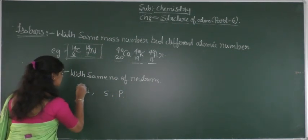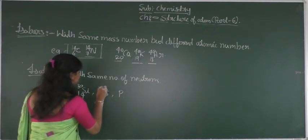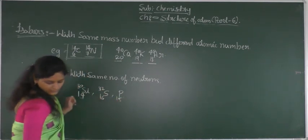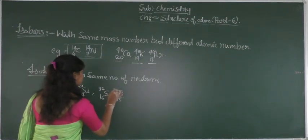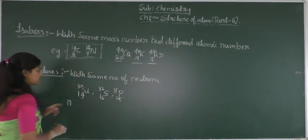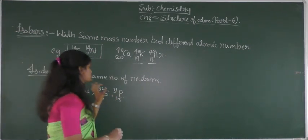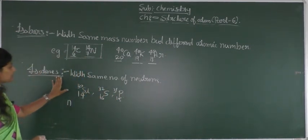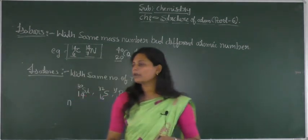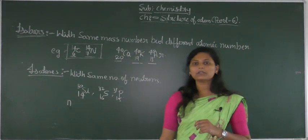For silicon: mass number 30, atomic number 14. For sulfur: mass number 32, atomic number 16. For phosphorus: atomic number 15, mass number 31. Find out the number of protons present in silicon, sulfur, and phosphorus. Isotones are elements with the same number of neutrons. I hope you understood today's session; we will meet in our next session. Thank you.